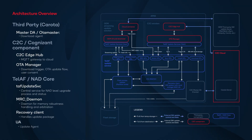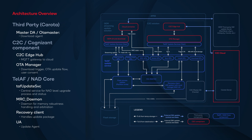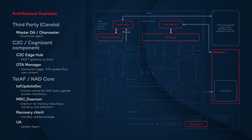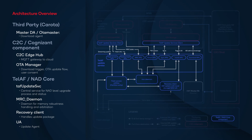This is a diagram of the C2C FOTA architecture. For third-party components, we have Corota Server on the cloud side and MasterDA Download Agent on the device side. Corota Server connects to MasterDA, and MasterDA provides an API to download the FOTA package from Corota Server. For C2C components, we have a web portal to upload the package to C2C Cloud. On the device side is C2C Edge Hub to talk to C2C Cloud. OTA Manager runs the FOTA workflow.